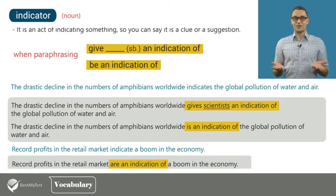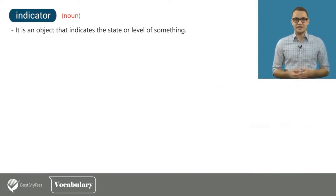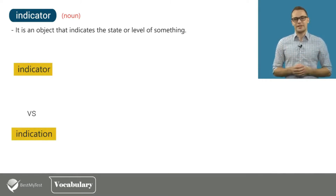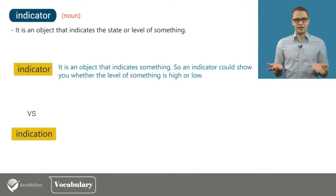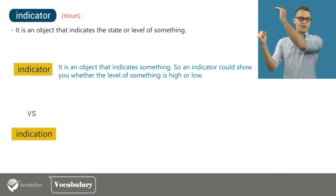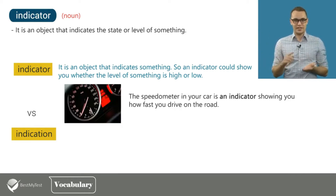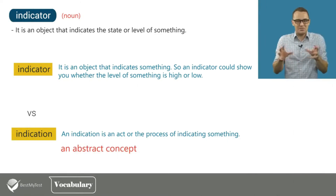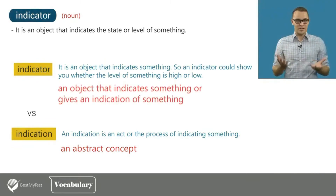There is another noun called indicator. Indicator is an object that indicates the state or level of something. Some people confuse indicator with indication, so let me explain the difference. An indicator is an object — for instance, the speedometer in your car is indicating how fast you drive on the road. An indication is an act or the process of indicating something — basically an abstract concept. An indicator is an object that gives an indication of something.